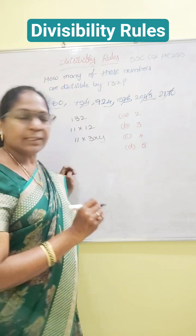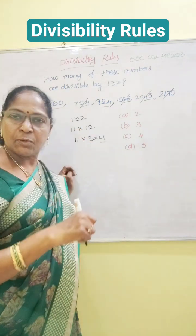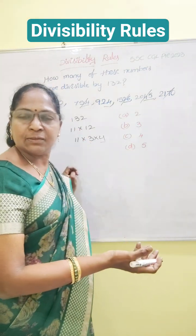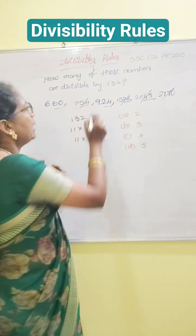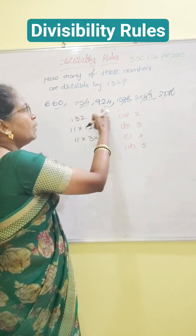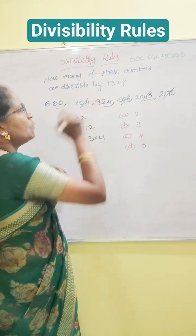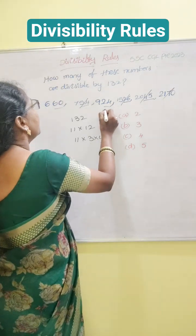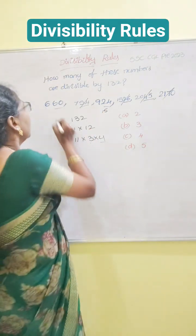Divisibility rule of 3: the sum of the digits is divisible by 3, then the entire number is also divisible by 3. Check: 6 plus 6 equals 12, divided by 3 — yes, it is divisible. This one also: 9 plus 2 is 11, 11 plus 4 is 15. Yes, 15 is also divisible by 3.